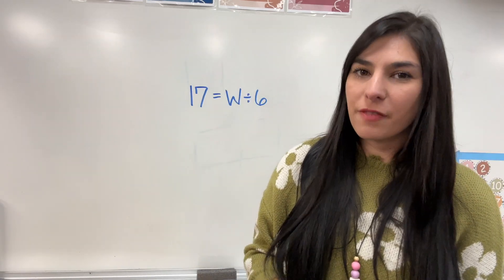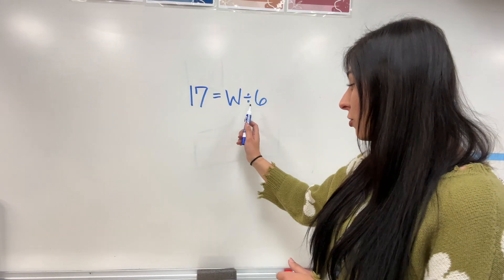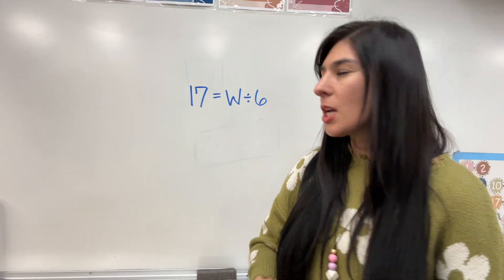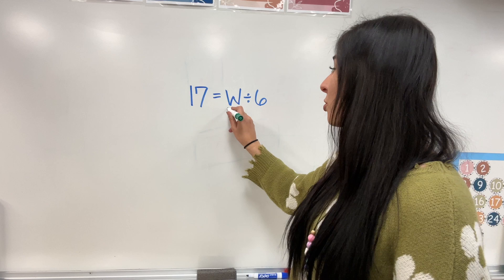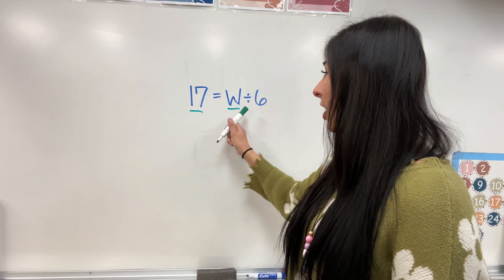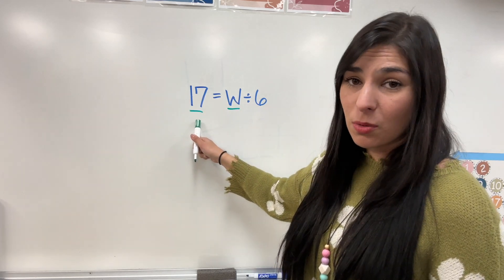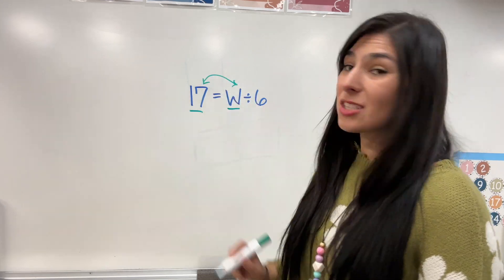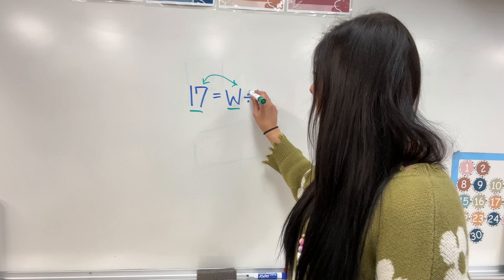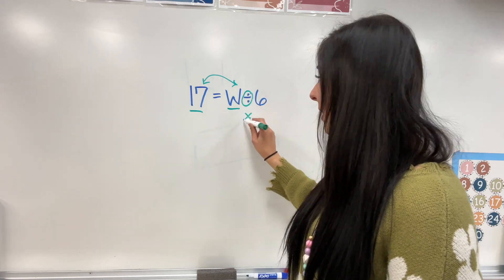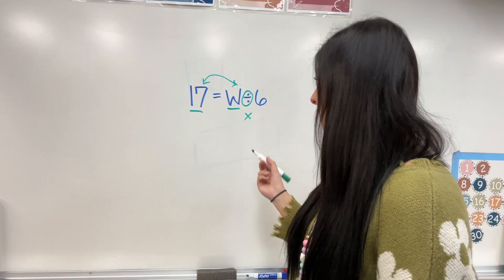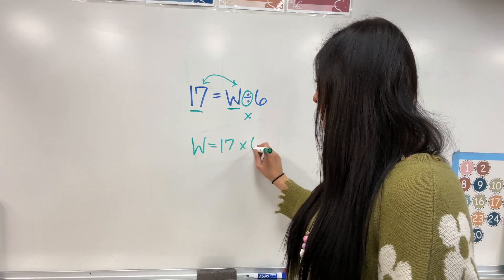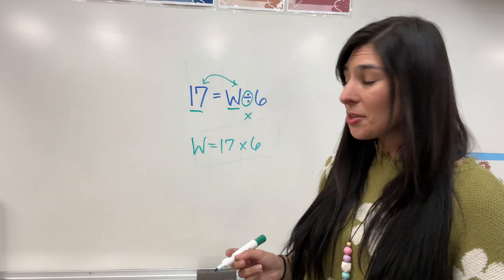Okay. So, if you do see a division equation with the old school division symbol and you need to find the variable, I wanted to show you how to solve that real quick. So, you are going to switch the variable with the number that's on the other side of the equal sign. You can switch them as long as you also switch this division sign to multiplication. So, let's switch it up. We have W equals 17 times 6. That's all you're doing.